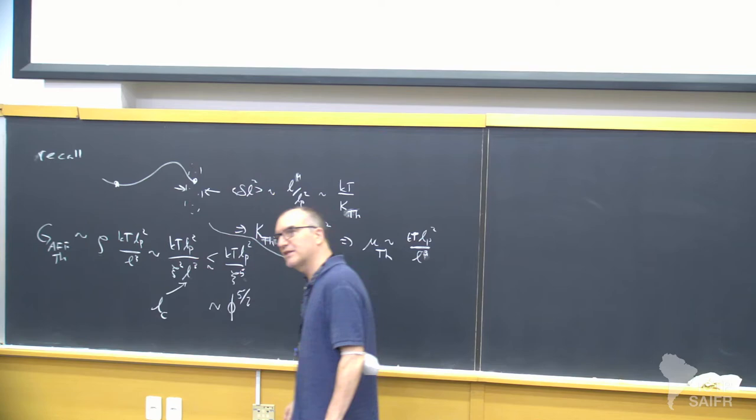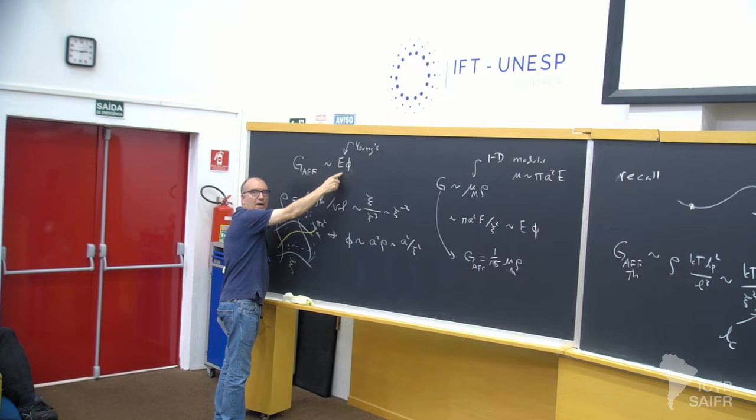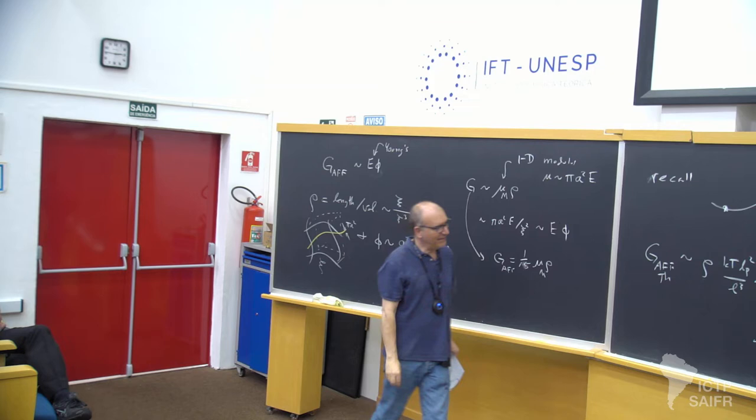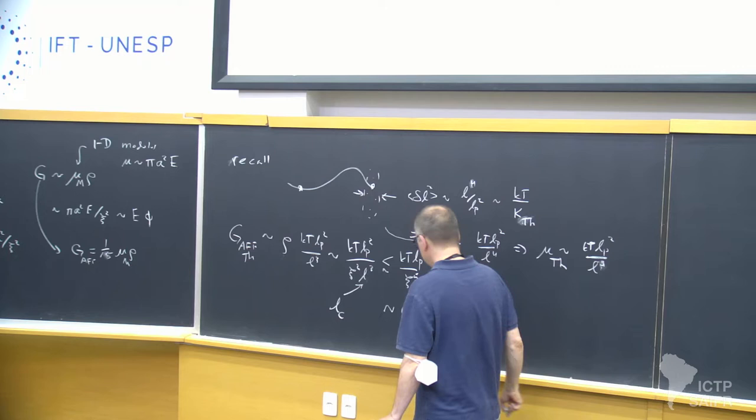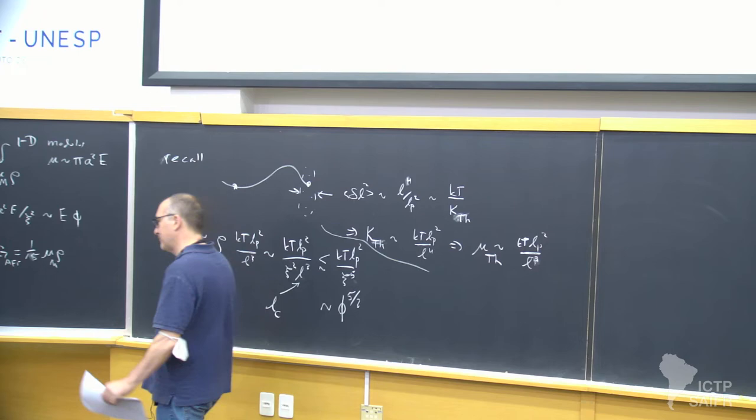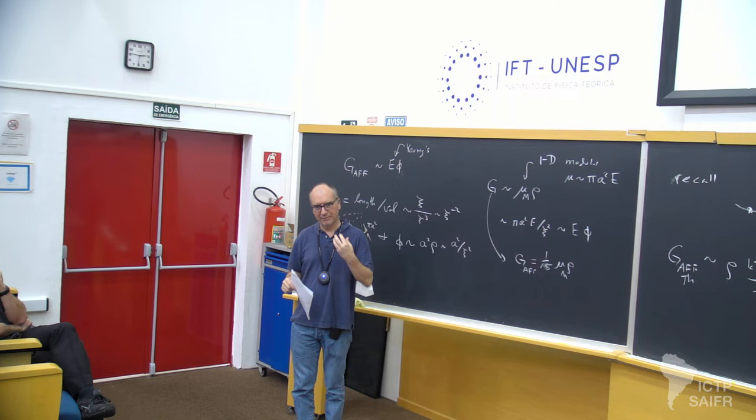Notice the very large power of the mesh size — it's actually an upper bound because typically this length is going to be larger than that. You begin to see this goes like the concentration to the five-halves power. That's one way to see that as I dilute the system, I get a weaker modulus than the naive estimate predicted. Let me just explain physically what's going on — it already came up as entanglement.